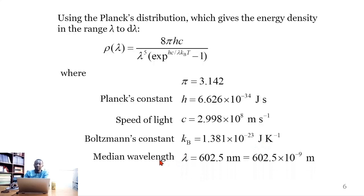The median wavelength is 602.5 nanometers, which we can write in terms of meters as 602.5 times 10 to the power of negative 9 meters. And temperature is 1,200 Kelvin.